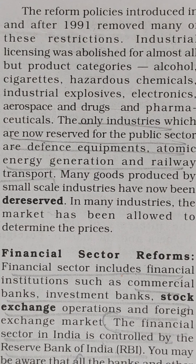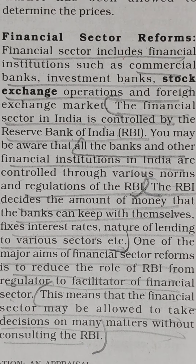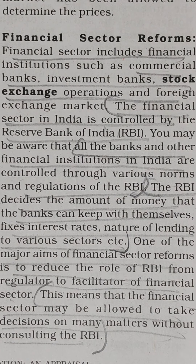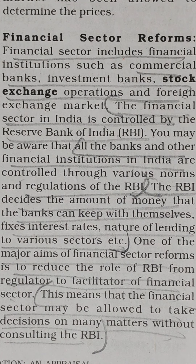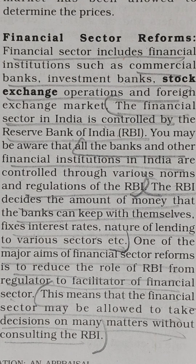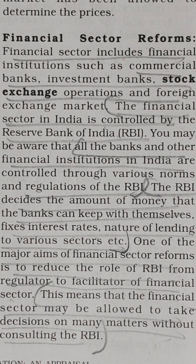Financial sector reforms. The financial sector includes financial institutions such as commercial banks, investment banks, stock exchange operations, and the foreign exchange market. The financial sector in India is controlled by the Reserve Bank of India (RBI). All banks and other financial institutions are controlled through various norms and regulations of the RBI, which decides the amount of money banks can keep, fixes interest rates, and governs the nature of lending to various sectors. One major aim of financial sector reforms is to reduce the role of the RBI from regulator to facilitator of the financial sector, meaning the financial sector may be allowed to take decisions on many matters without consulting the RBI.